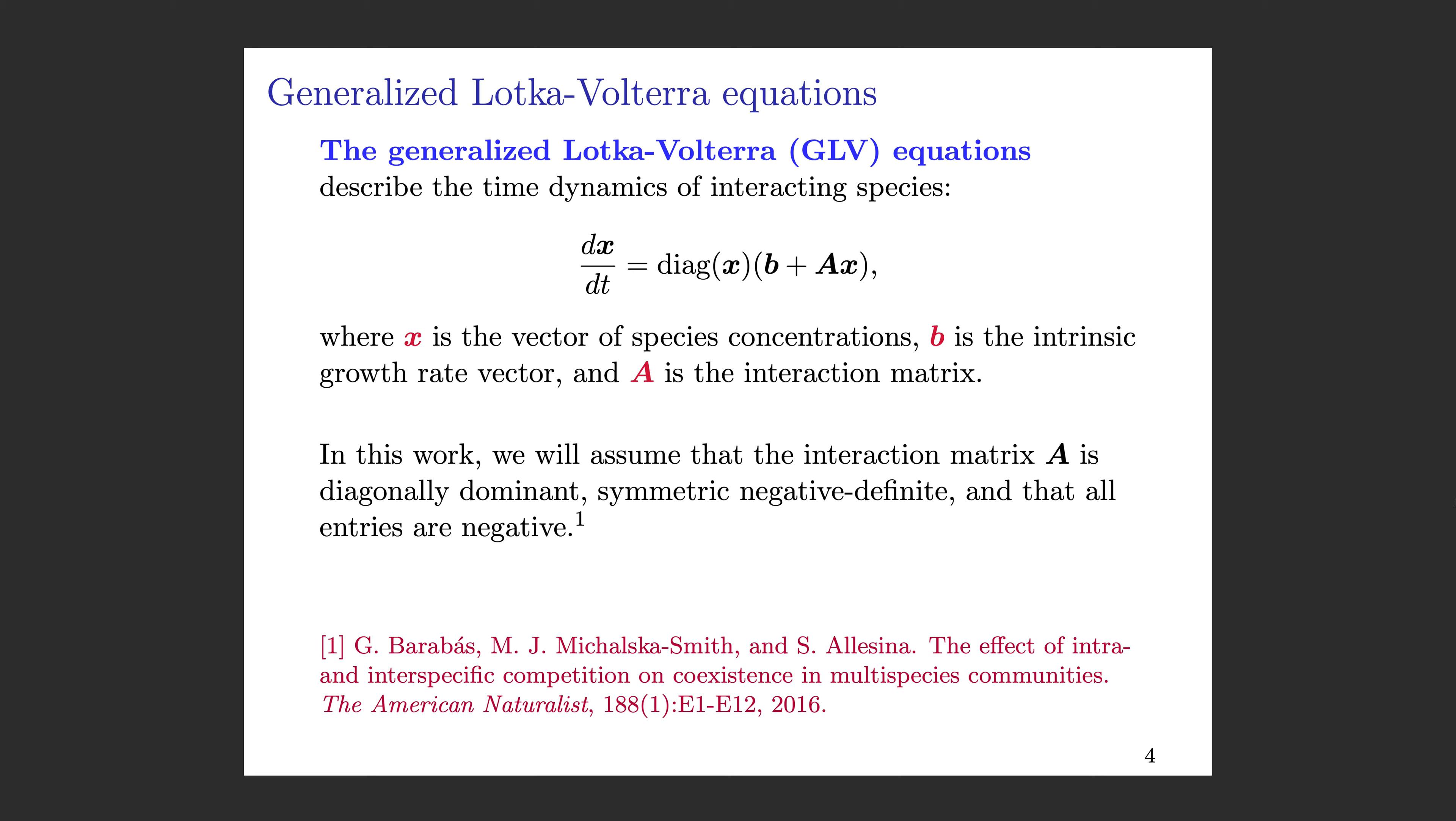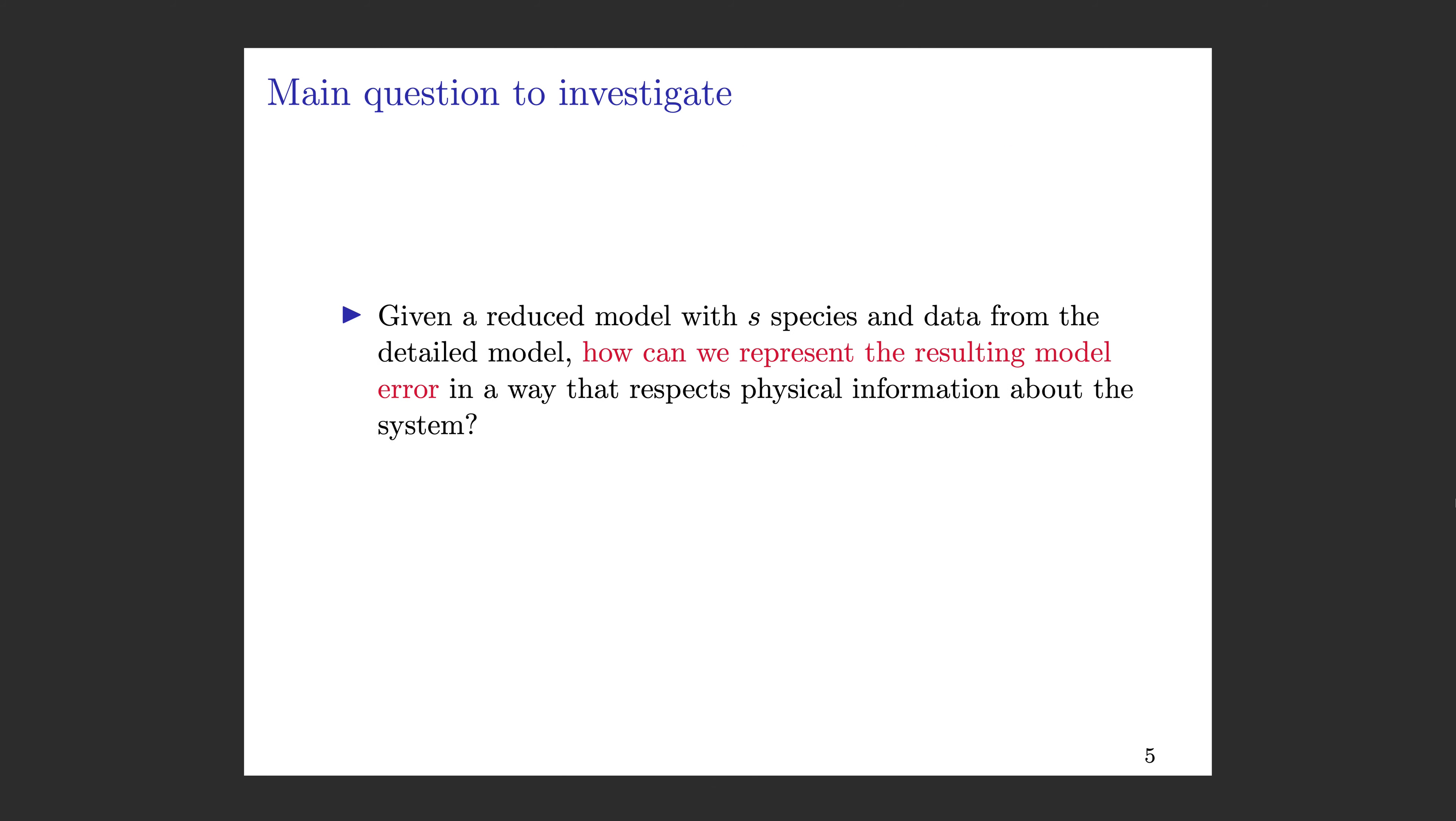We'll make a couple assumptions to narrow the scope. We'll assume that the interaction matrix A is diagonally dominant, symmetric, negative definite, and that all entries are negative. In an ecological sense, this means that all interactions between species are competitive. These are not uncommon assumptions. So there's one main question: given a reduced model with little s species and data from some detailed model, how can we represent the resulting model error in a way that respects physical information about the system?